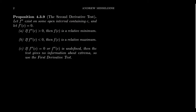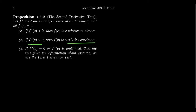Let the second derivative exist on some open interval containing c, and suppose f'(c) = 0, so c is a critical number. If the second derivative is positive at c, the function is concave up, meaning the critical number is a relative minimum. If the second derivative is negative at c, the function is concave down, and therefore it must be a local maximum. If both the first and second derivatives are zero at c, or the second derivative is undefined, we don't have enough information to determine whether it's an extremum.